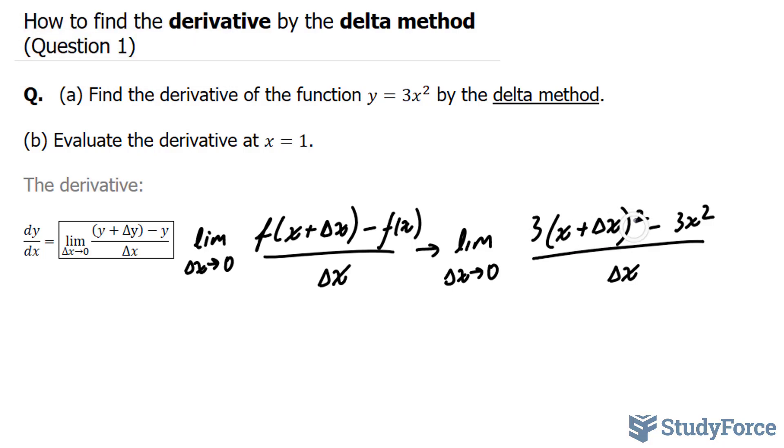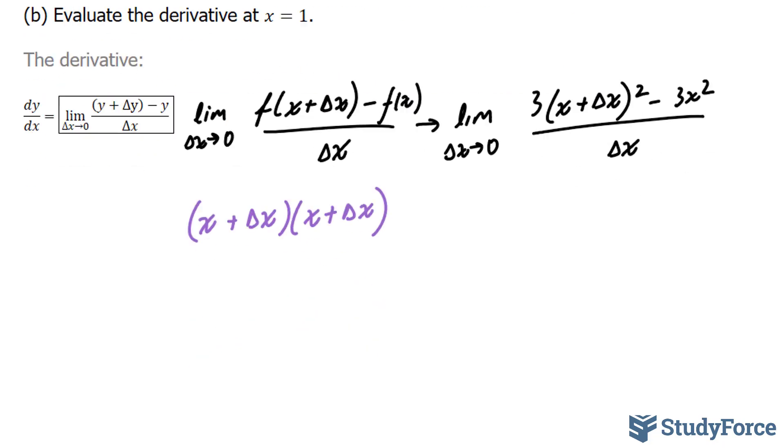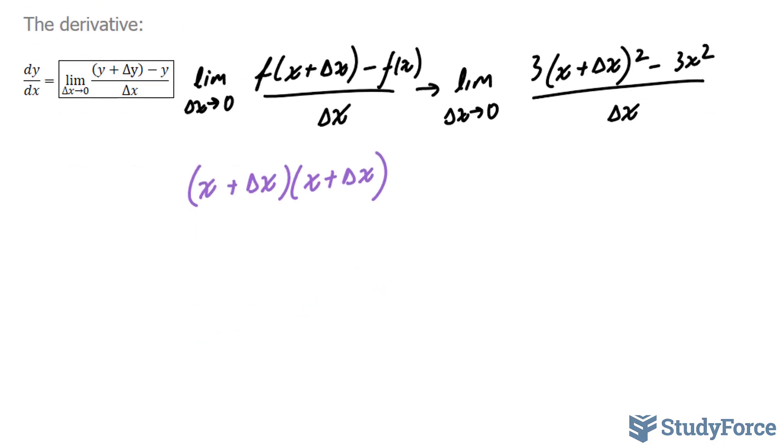The next step is to expand this part, and I'll do that over here. We have x plus delta x multiplied in itself. This is not hard to do. We're multiplying two binomials. x times x is x squared. x times delta x is x delta x. And similarly, multiplying these two gives you the same term. This term times this term gives us plus delta x squared. I'll combine these where I end up with x squared plus two of these x delta x plus delta x squared.